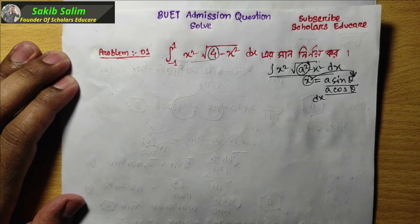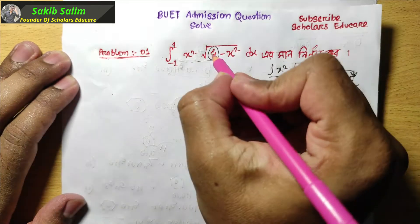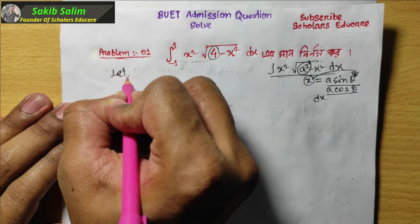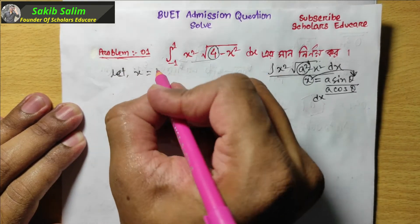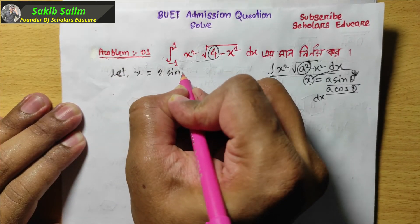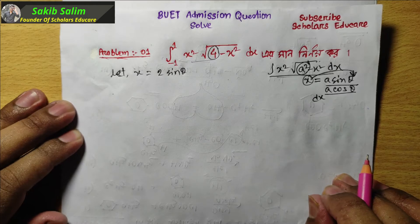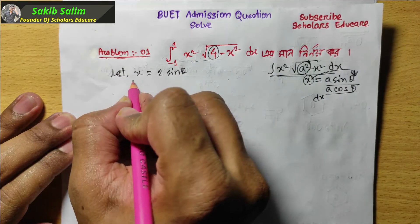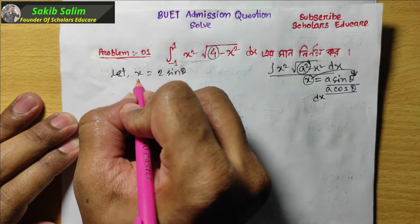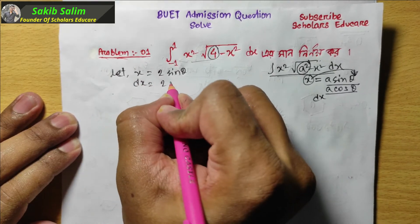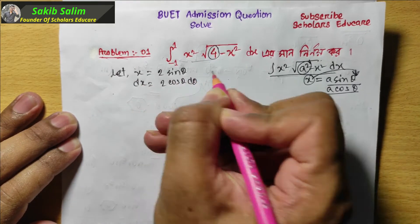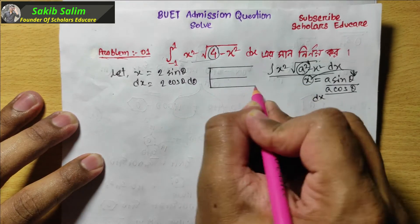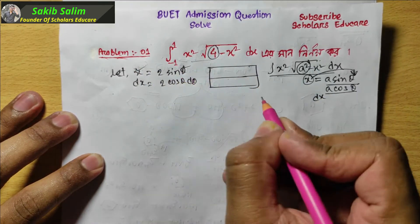We will solve the first problem. Let x equal 2 sin theta. We find sin theta, then we find cos theta, and dx is equal to 2 cos theta d theta. Then we change the x variable to the theta variable.